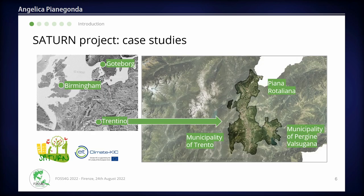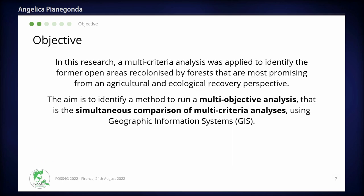Our research was conducted during the Saturn project, which was an EIT Climate KIC project that started in 2019 and ended in 2021. Three areas were part of the Saturn project: the city of Gothenburg in Sweden, the city of Birmingham in the UK, and the Trentino region in Italy. In the Trentino region, we have three main areas: the municipality of Trento, the municipality of Pergine, and the Piana Rotaliana Valley. The objective was to apply a multi-criteria analysis to identify former open areas reclaimed by forests that are most promising from an agricultural and ecological recovery perspective.